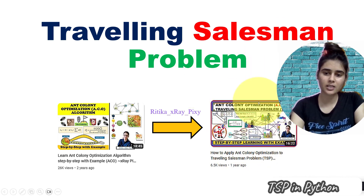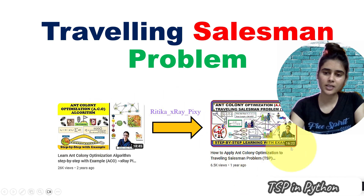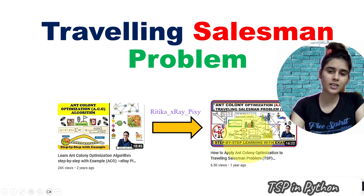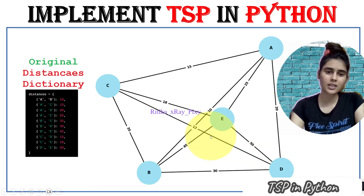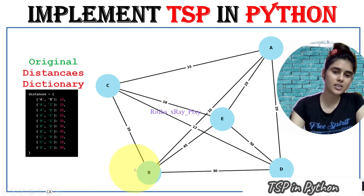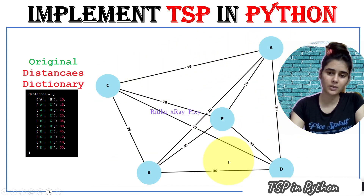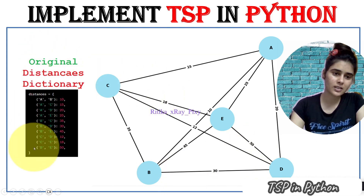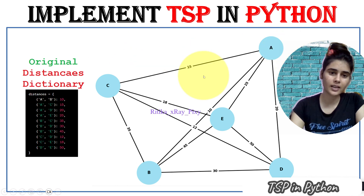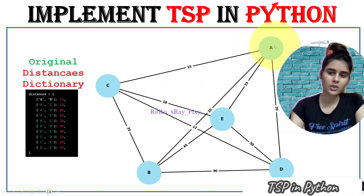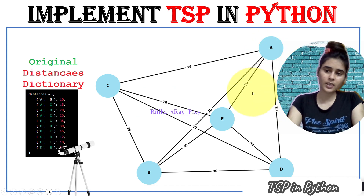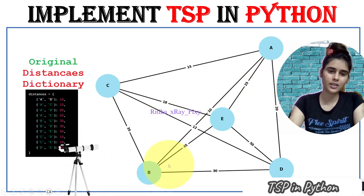Step by step we will implement the Traveling Salesman Problem in Python. We already discussed this in a previous video where we applied the Ant Colony Optimization algorithm to solve TSP — you can check the link below in the description box. Right now you can see we have a total of five cities, and the distance is given between each city. Here you can see the distance dictionary containing all distances, like A to B is 10, A to C is 15, A to D is 20, A to E is 25, and so on.